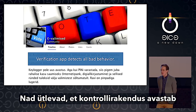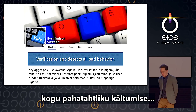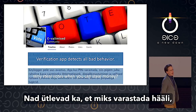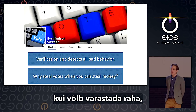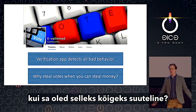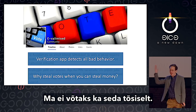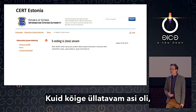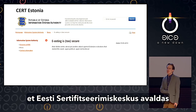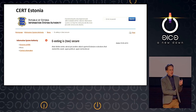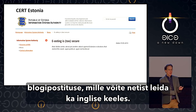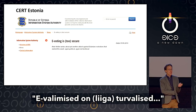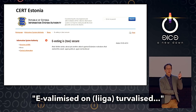They say the verification app detects all bad behavior. They also say, why steal votes when you can steal money if you could do all of this? But the most surprising thing was that Estonia CERT came out with a blog post titled, quote, 'E-voting is too secure.' They claim that nice people who care about computer hygiene have no viruses, and that in practice computer risks have been eliminated in the voting system.